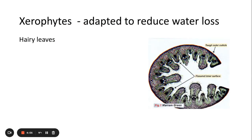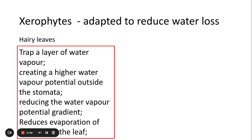Some xerophytes also have hairy leaves, and these are for exactly the same reasons. They trap a layer of water vapor, creating a high water vapor potential outside of the stomata, therefore reducing the water vapor potential gradient and reducing the evaporation of water vapor from the leaf via the stomata.